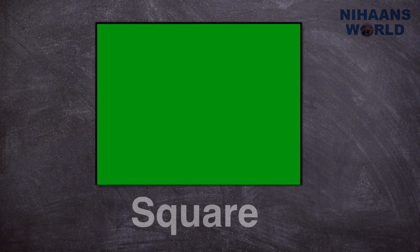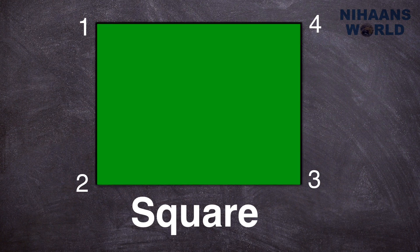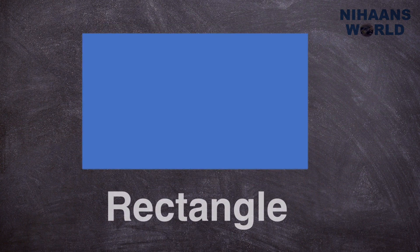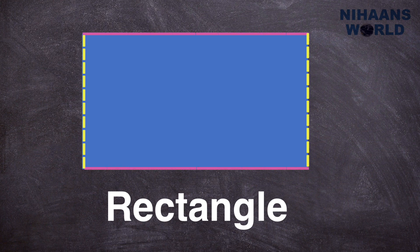Square. A square is a closed 2-dimensional shape with 4 equal sides and it has 4 vertices. Rectangle. A rectangle is a 2D shape having 4 sides and it has 4 vertices.